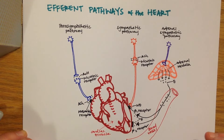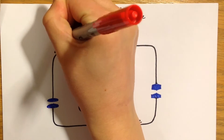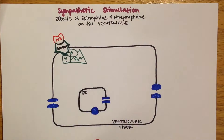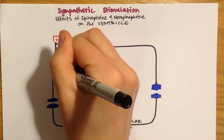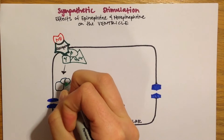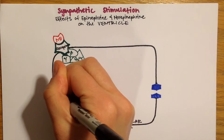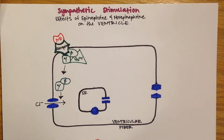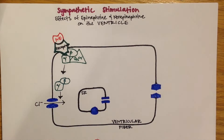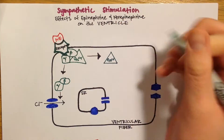Zooming in for a closer look, let's talk about the effects of epinephrine and norepinephrine in the sympathetic stimulation of the ventricle. The hormone binds to an adrenergic receptor, which is coupled with a G-protein. Part of the G-protein splits off and helps stimulate the cell permeability to chloride ion. The rest of the G-protein will interact with adenylyl cyclase to create cyclic AMP from ATP.